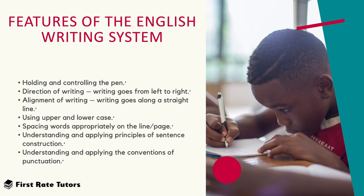Writing needs to go on a straight line. Very young children sometimes find it really difficult to write in a straight line and it tends to go quite wonky. However, the older they get, the more they understand the importance of a line in their writing. Another feature of the English writing system is using upper and lowercase — in other words, capital letters — but also knowing when not to use capital letters.